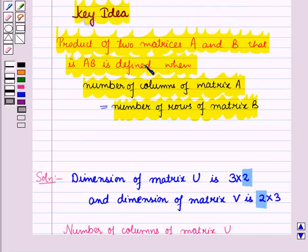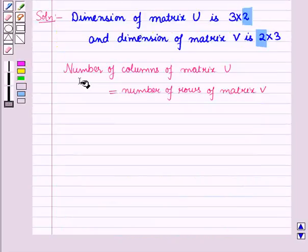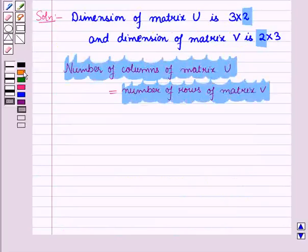From the key idea, the product of two matrices A and B is defined where the number of columns of matrix A is equal to the number of rows of matrix B. Here, the number of columns of matrix U is equal to the number of rows of matrix V. So the product UV is defined.